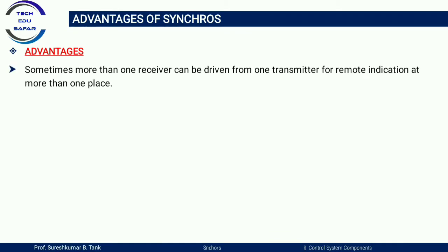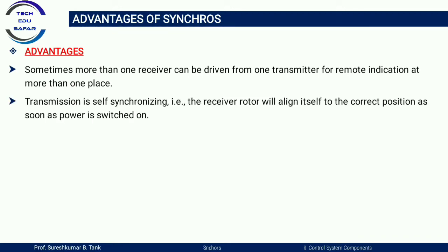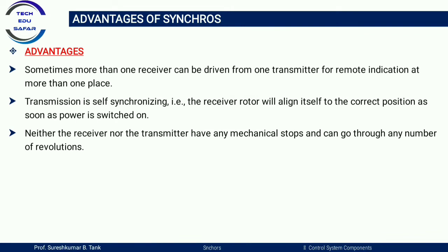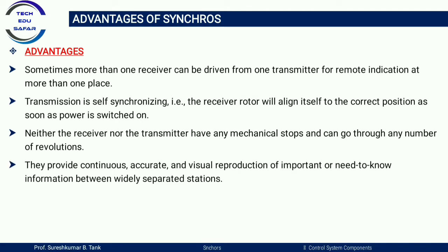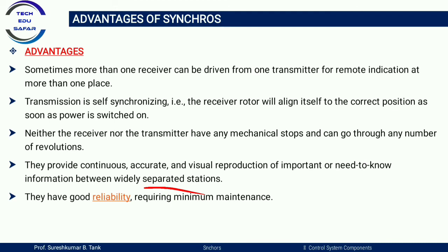The advantages of synchro are: first, more than one receiver can be driven from one transmitter for remote indication at more than one place. Second, transmission is self-synchronizing — the receiver rotor aligns itself to the correct position as soon as power is switched on. Third, neither the receiver nor the transmitter has mechanical stops and can go through any number of revolutions. Fourth, they provide continuous, accurate, and visual reproduction of information between widely separated locations. Finally, synchro has very good reliability and minimum maintenance requirements.